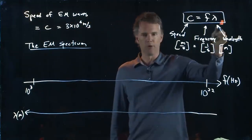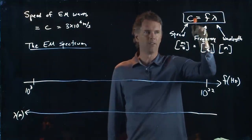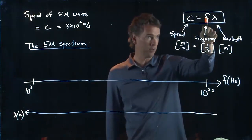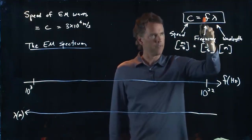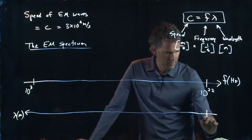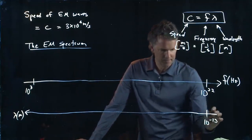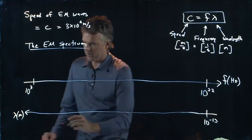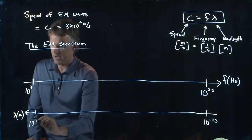Those are inversely related since C is a constant, right? If F goes up, lambda has to go down. If F goes down, then lambda has to go up. And this over here is on the order of 10 to the minus 13, and it goes all the way over to on the order of 10 to the 5.